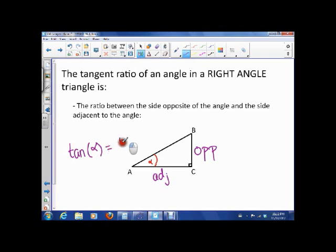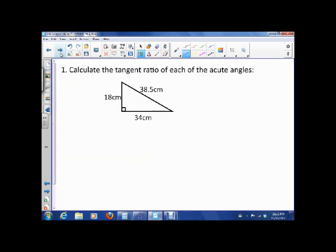We can write tangent of that angle alpha equals opposite over adjacent. We want to calculate the tangent ratio for each of these acute angles. The first thing I want to do is name the angles A, B, C. A is not an acute angle, it's a 90 degree angle, so first let's find the tangent of angle B. The tangent of B is opposite over adjacent, so that'll be 18 over 34, and we can simplify that to 9 over 17.